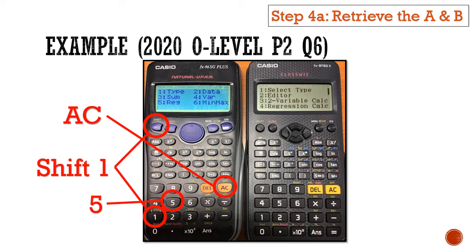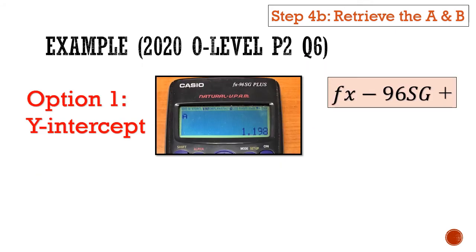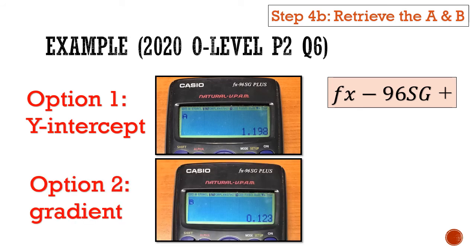For the 96SG, it's much easier, all you need to click on is option, followed by regression calc, which is option number 4. So for the fx-96SG Plus, you're going to be given a few options, A, B, R. So if you choose option 1, which is A, you'll get the y-intercept, which is 1.198. And if you select option 2, which is the B, and you press equal, this will give you a gradient of 0.123.